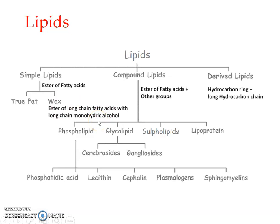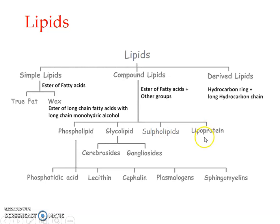Compound lipids are otherwise known as conjugated lipids. They are esters of fatty acids but may contain some other groups. For example, in phospholipids they contain a phosphate compound; in glycolipids they contain carbohydrate; in sulfolipids they contain sulfur-based compounds; and in lipoproteins they are esters of fatty acids along with protein. We will be dealing with phospholipids in detail in this session.